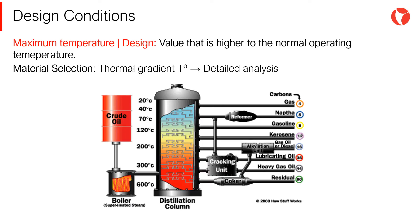The maximum temperature, also known as design temperature. Many times, especially for slender columns, we will not have a single design temperature but a gradient. Considering the hottest point as the design temperature would be too conservative and could bring too many associated costs. Since there is a temperature gradient between the hottest and the coldest point, it is necessary to assess the affected area and select materials and thicknesses accordingly.